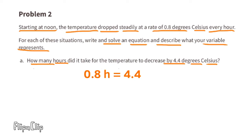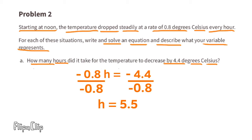Since the temperature was dropping 0.8 degrees, we put a negative sign, and since the temperature decreased by 4.4 degrees, we put a negative sign there too. To get H alone, we divide both sides by negative 0.8. A negative divided by a negative equals a positive, so both sides will be positive — leaving H on the left and 5.5 on the right. It took 5.5 hours for the temperature to decrease by 4.4 degrees.